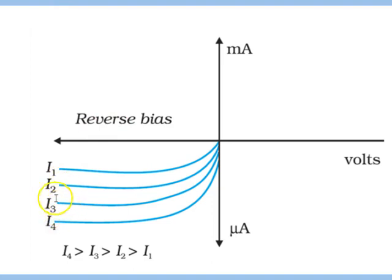Let's look at any one graph, say intensity is I2. So what happens is as you reverse bias more and more, the current first increases in magnitude—remember the direction is opposite.